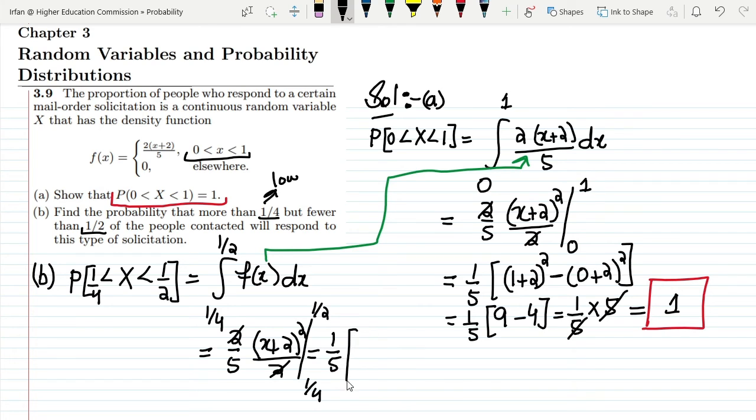Solving it with the limits: it would be 1/5 times [(1/2 + 2)² minus (1/4 + 2)²]. You can find it out and ultimately you will see the answer is 19/80, which is the answer of part (b).